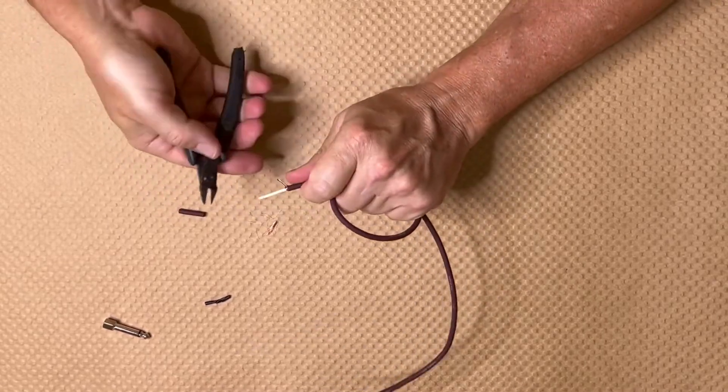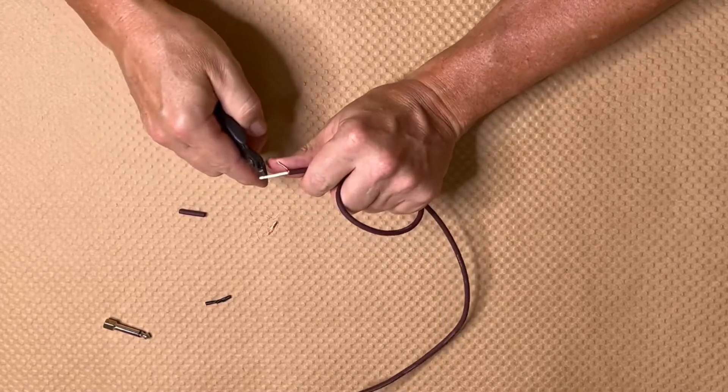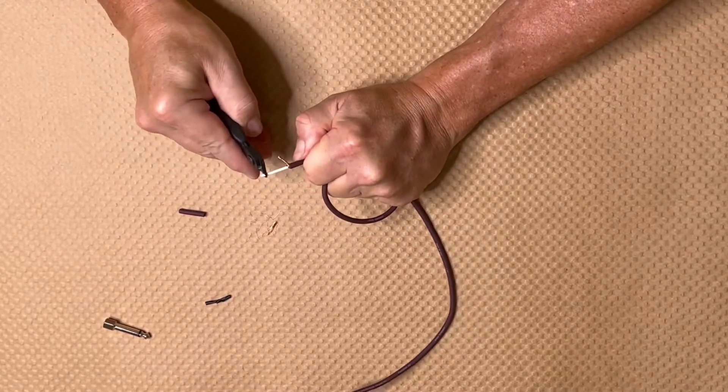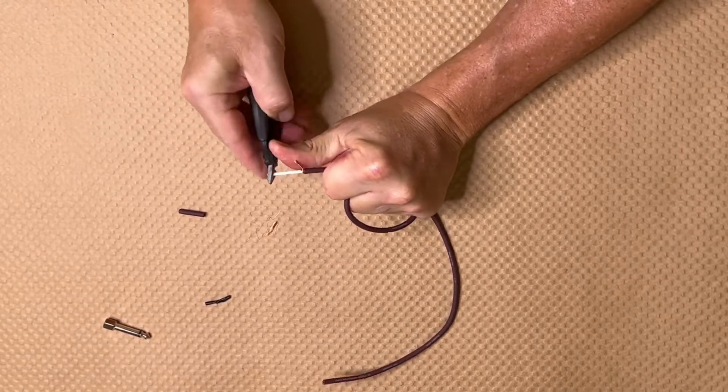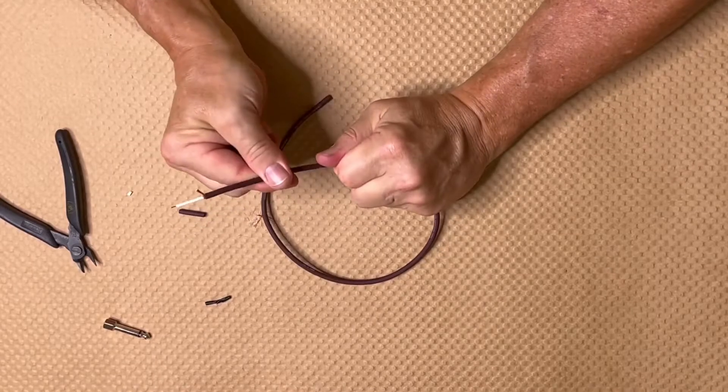I'm going to score the white insulation material. Don't go through too deep to cut the copper core—you don't want to weaken that—and just pull it off. It moved a little bit, so I'm going to bring this together.